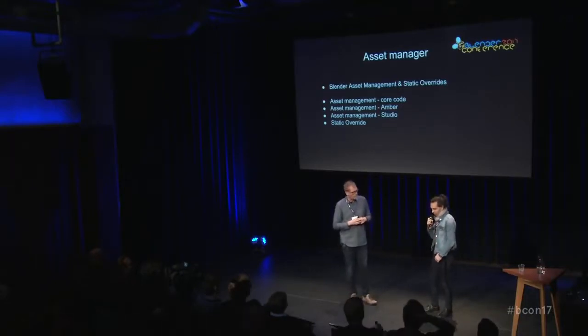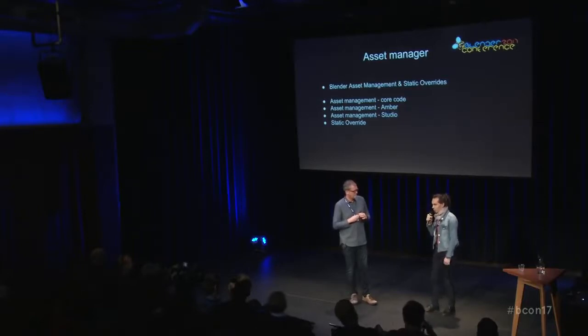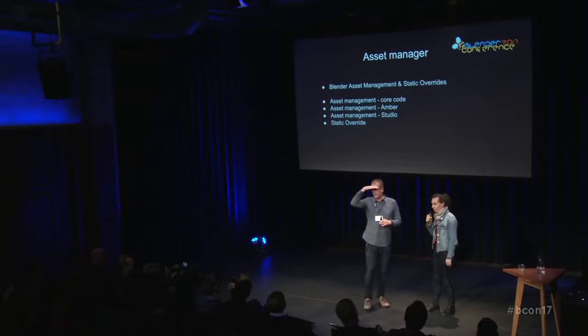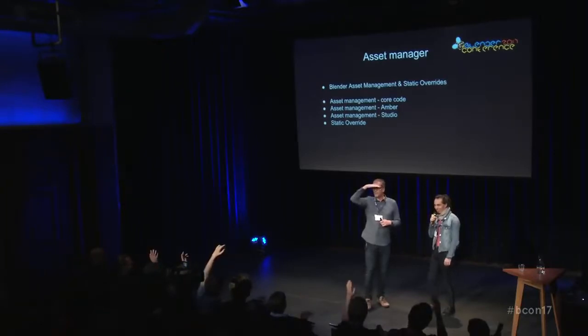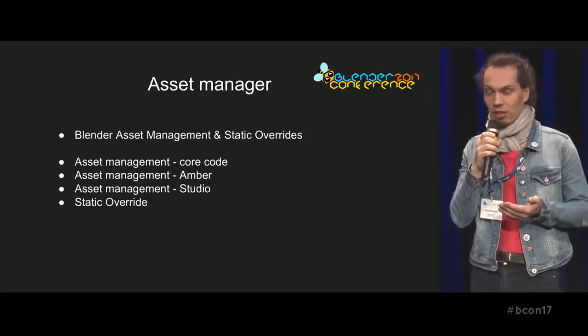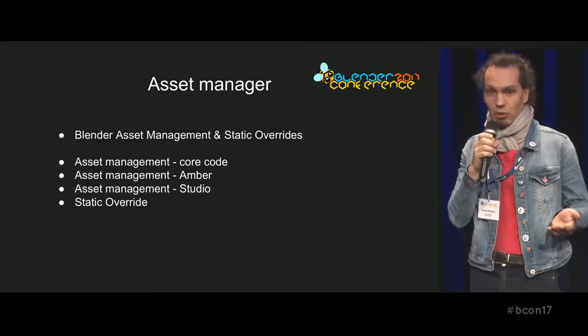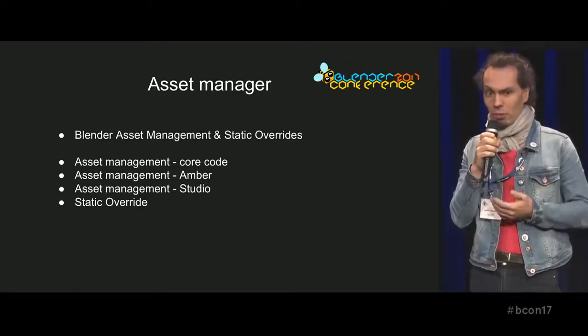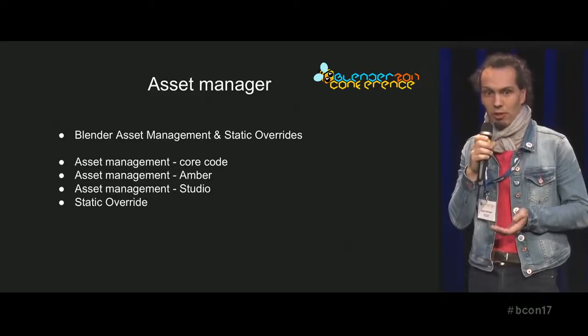The override is the other exciting thing. Static override is basically the idea to replace the current proxy system, which is kind of working for what it was designed for initially. The proxy system: when you are linking an object in Blender you can't edit it because it's coming from another Blender file — you're just borrowing it. So to be able to animate a character you have to create a proxy of its armature to edit it locally. Right now proxy is kind of a hacky system, and the goal is to replace it.